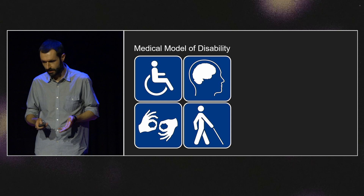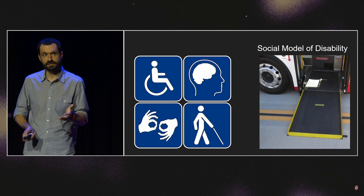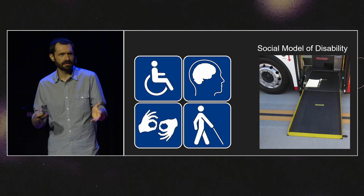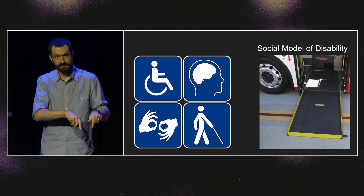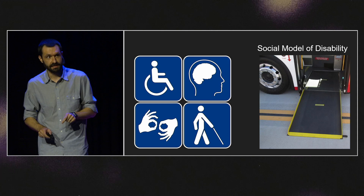The flaws of this model become apparent when you contrast it with what is called the social model of disability, a term coined by activist Mike Oliver in the 1980s, distilling ideas that were bubbling within the disability rights movement at the time. The social model says that if a wheelchair user can't use the stairs, the problem is the stairs. If a deaf person can't follow along with the video, the problem is the lack of subtitles.